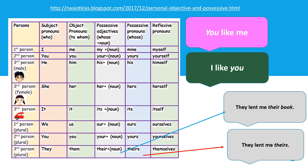Bedanya 'their' tanpa S dengan 'theirs' dengan S: 'They lent me their book' — their tanpa S harus ada noun-nya, di sini noun-nya adalah 'book.' Buku mereka — mereka meminjamkan buku mereka. Kalau 'theirs' pakai S, noun-nya dihilangkan — mereka meminjamkan punya mereka. Itu saja bedanya: yang satu pakai noun, yang satu tidak perlu pakai noun.